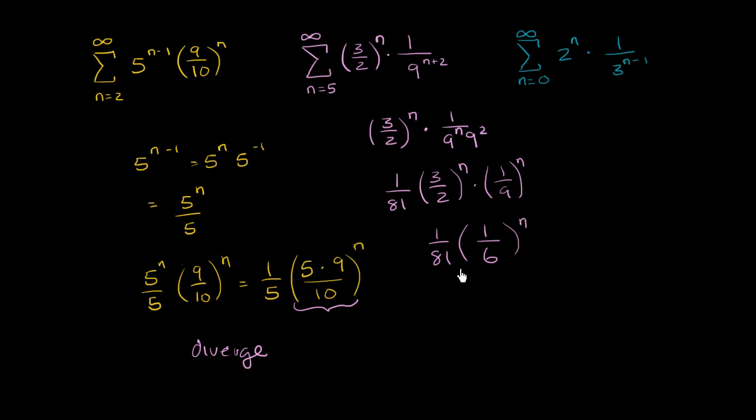And so here it's a little bit clearer that our common ratio is 1 sixth. Its absolute value is clearly less than 1, so this is going to converge. This is actually going to give you a finite value for the sum.